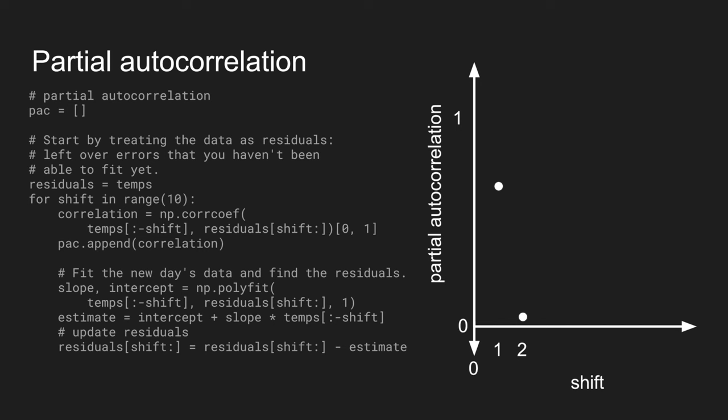So, in the case of temperature, once we use the previous day to estimate today's temperature, there's actually not a lot of information left in the days that come before. So, it falls down to the noise very quickly.